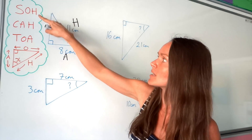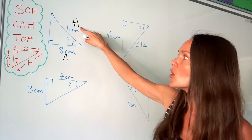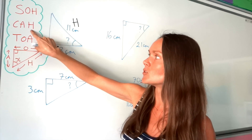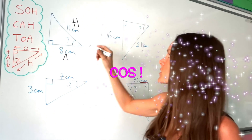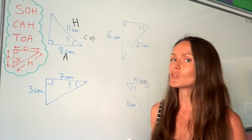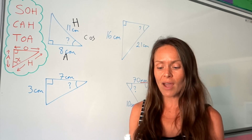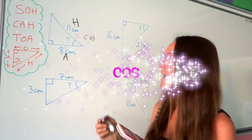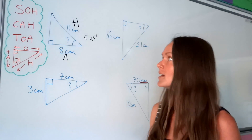We need to choose sine, cos, or tan — the one that uses adjacent and hypotenuse. Looking at SOHCAHTOA, that's cos. So for the first question we're going to be using cos. When you're finding angles you need to use cos⁻¹, sine⁻¹, or tan⁻¹. To get that on your calculator, press shift followed by cos, which should give you cos⁻¹.